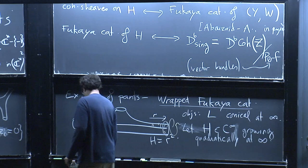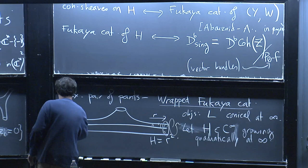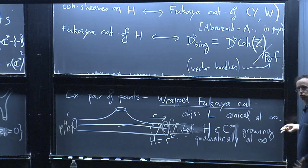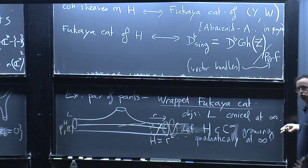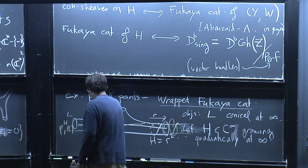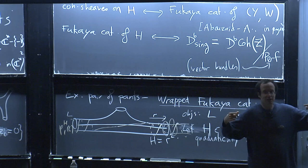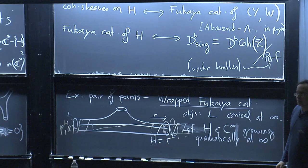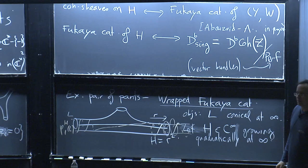The image of L under the time-one flow of H starts wrapping around the cylindrical end at a constant pace if you chose things to be quadratic — introducing a component of Reeb dynamics into the story. Having done such perturbations, there is a well-defined perturbed intersection theory between Lagrangians with conical ends: you take two Lagrangians, push one by this flow, and ask where do the things intersect.